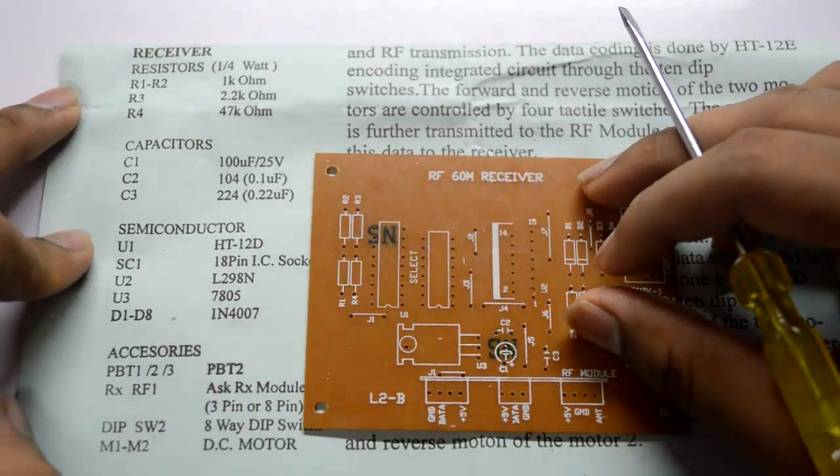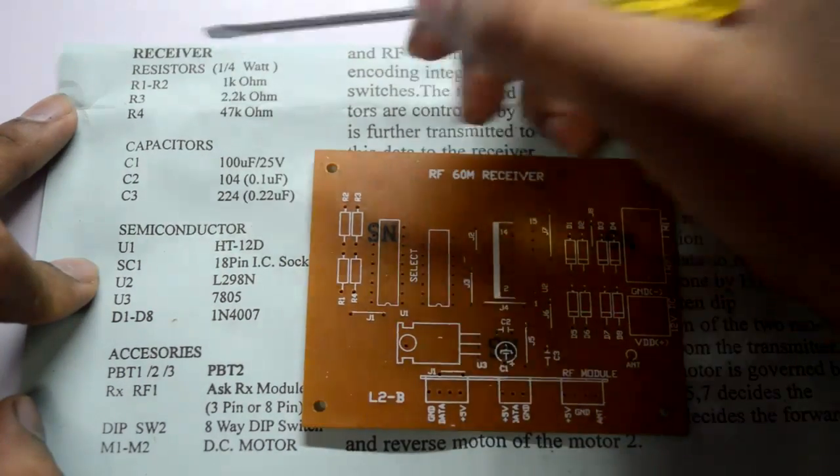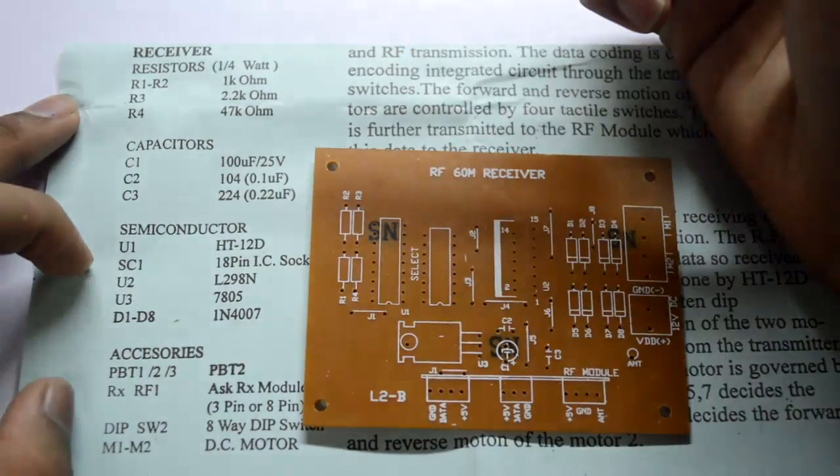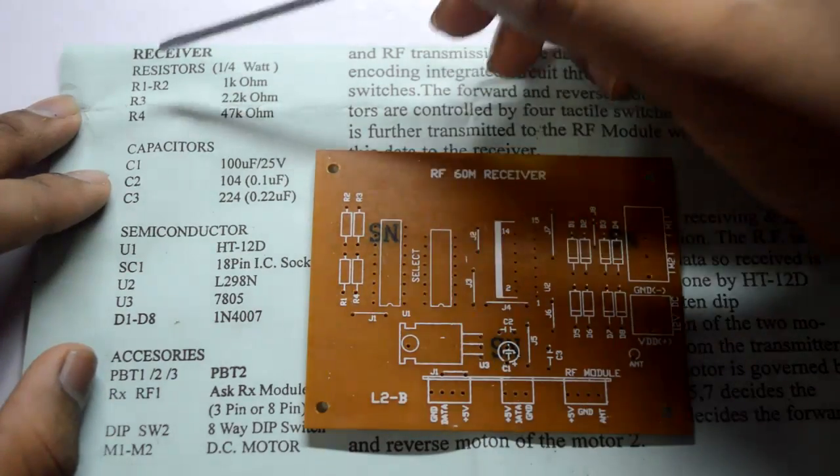Now this is basically the list of all the components we are using in the receiver module. You will start with the resistors, capacitors, the other semiconductors and the other accessories. So let's begin with the resistors.